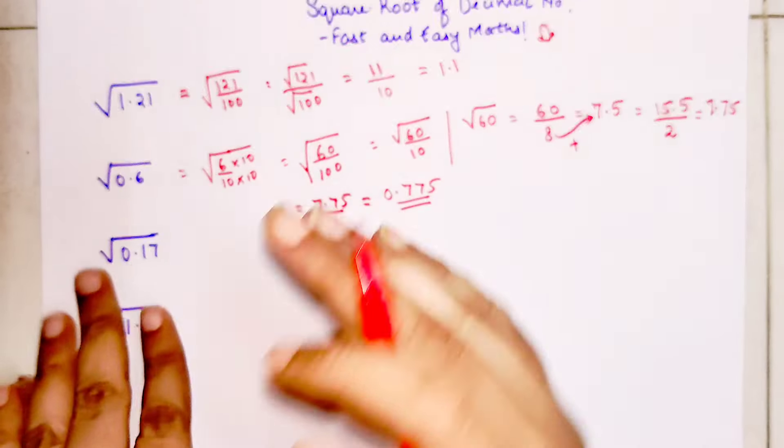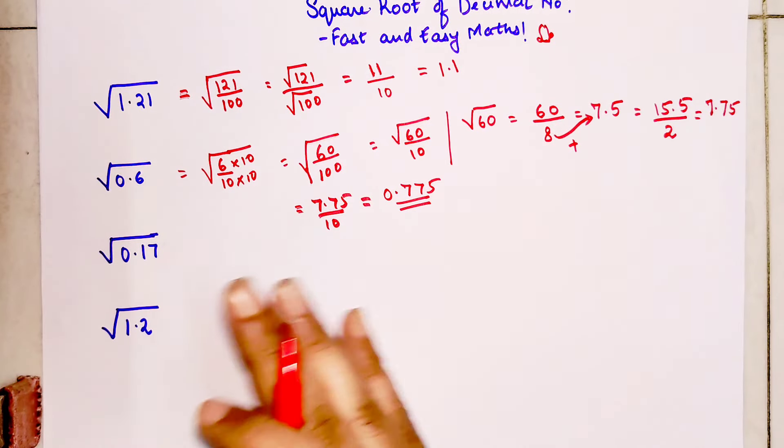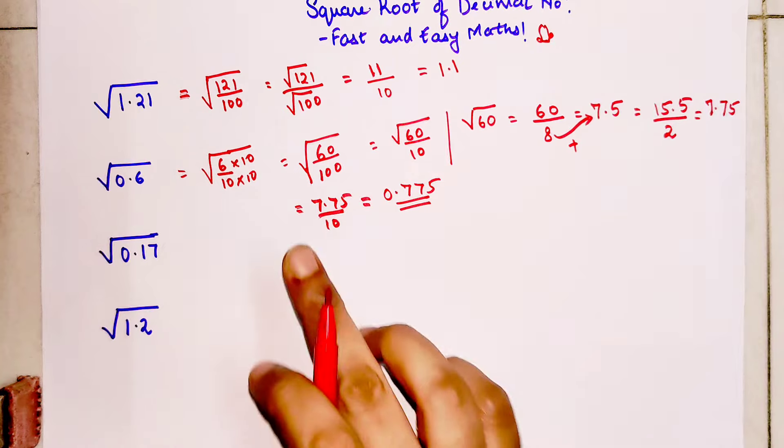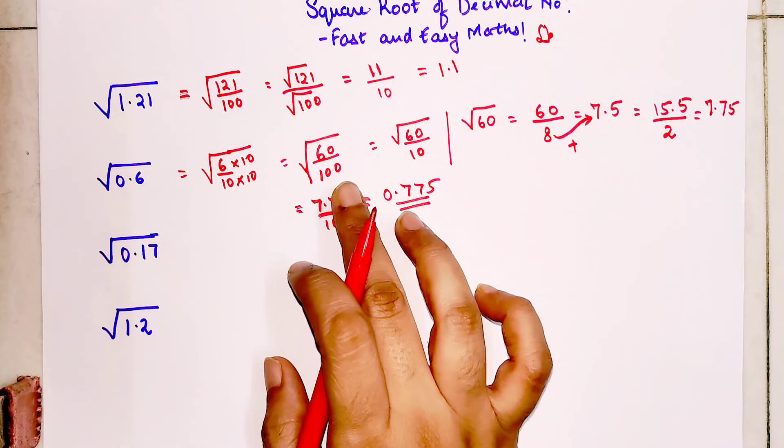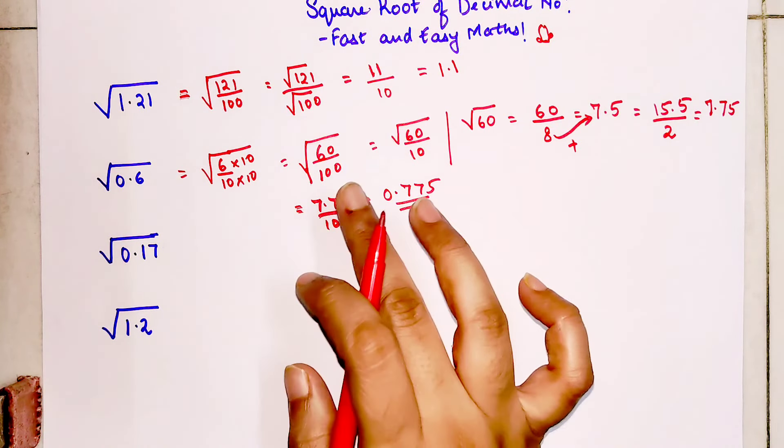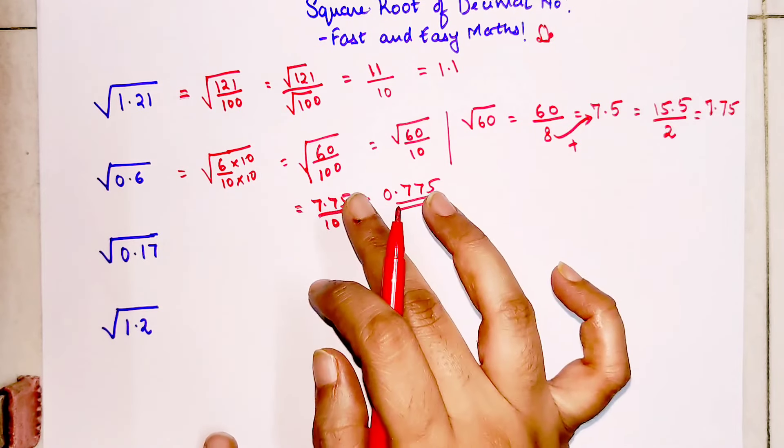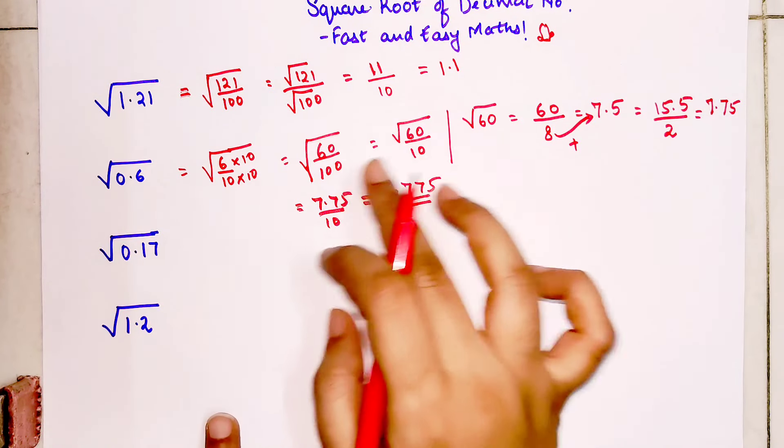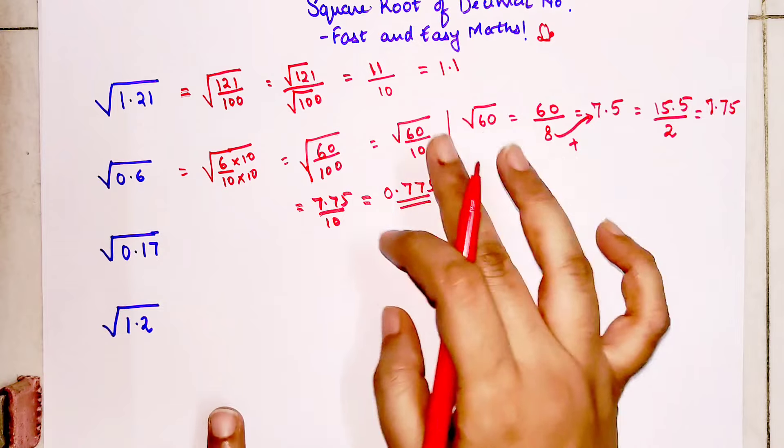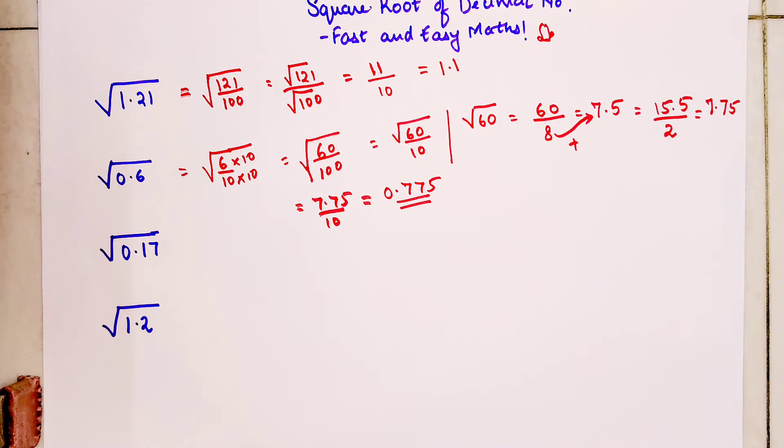What happens over here is whenever you get a decimal, you try to convert this in the form of 100 as the denominator, so your numerator gets manipulated in the form of 100. And then you simply try to find the square root of your numerator.